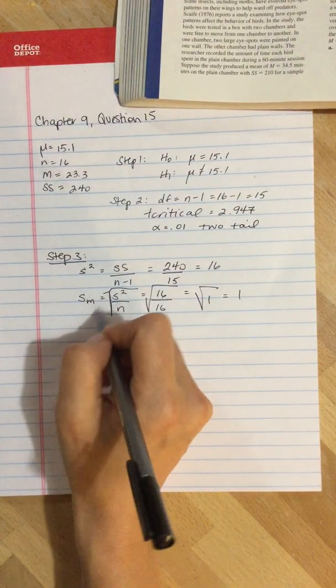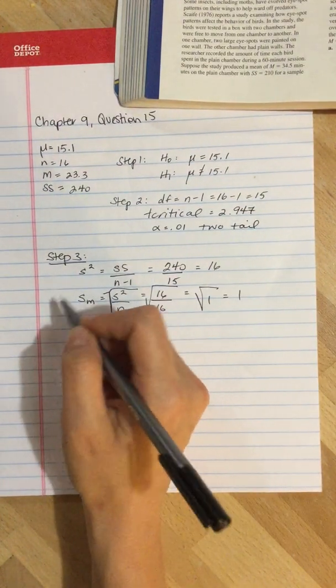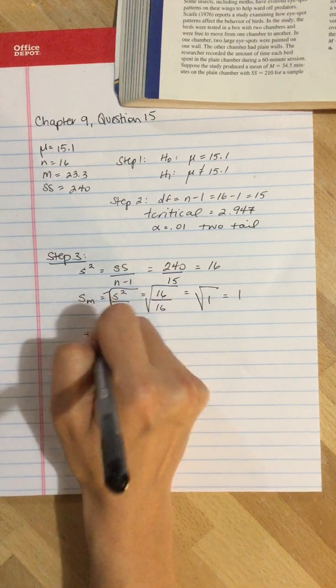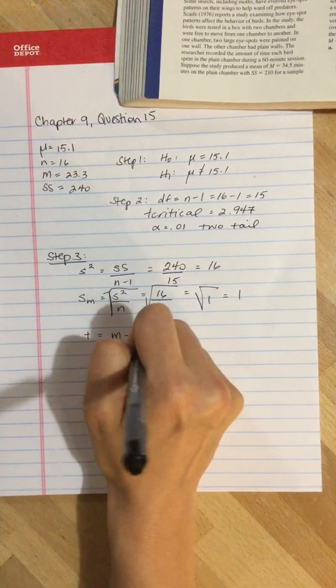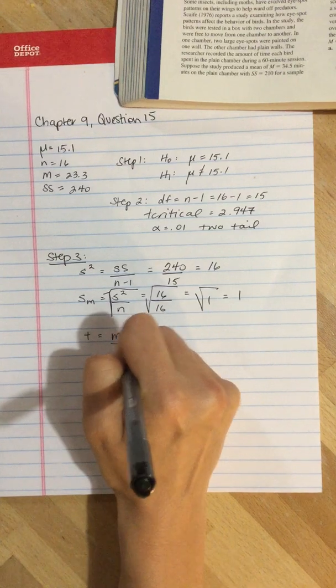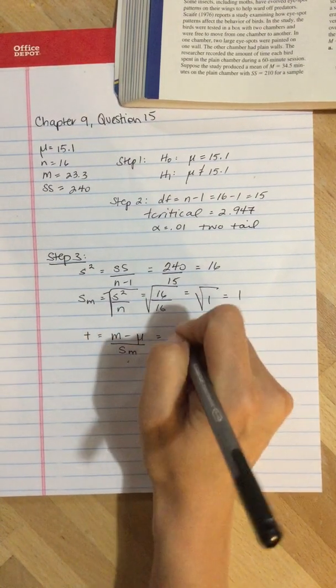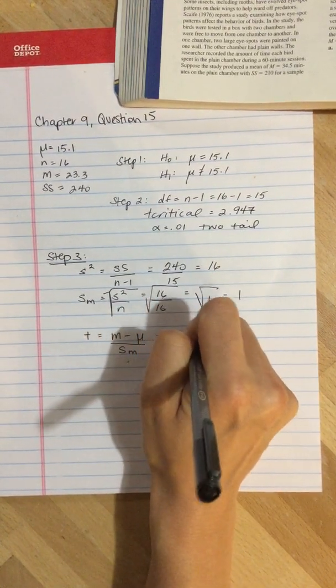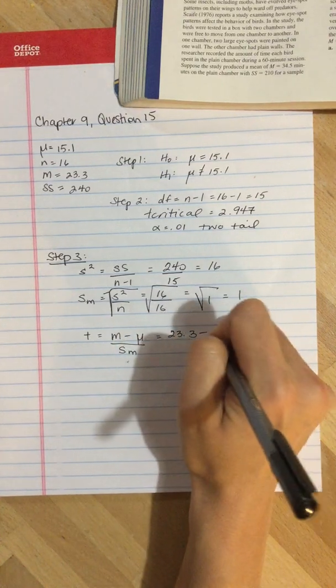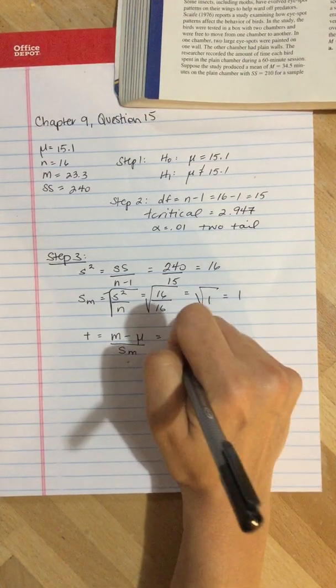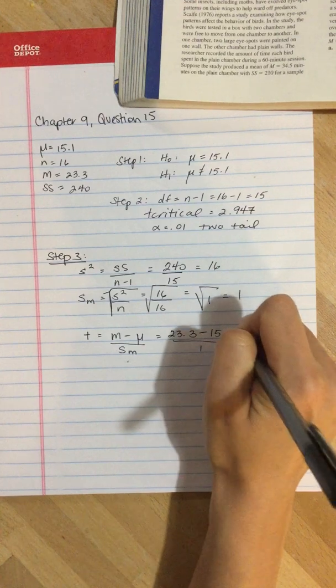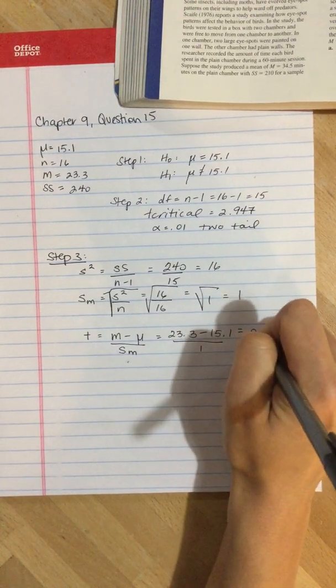Now we're going to take this estimated standard error and plug it into our t formula. So the mean was 23.3 subtract 15.1, divided by 1. That's 8.20.